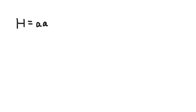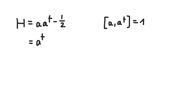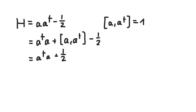Last time, we introduced the number operators a and a dagger and wrote the Hamiltonian as a a dagger minus one half. We also calculated the commutator of a and a dagger, which was plus one. Using this commutator, we can exchange the place of a and a dagger. As an abbreviation for a dagger a, we will write a capital N, which stands for number operator.